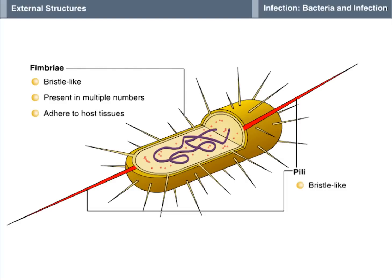Pili are longer than fimbriae and are present either singly or in pairs on a single bacterium. Their purpose is to enable one bacterium to adhere to another during a specialized process called conjugation in which DNA is transferred between cells.